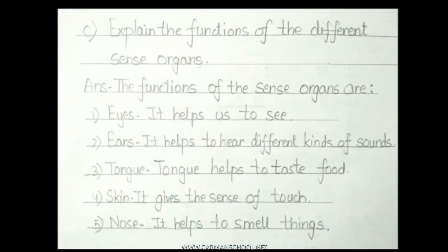Question C: explain the functions of the different sense organs. Answer: the functions of the sense organs are — first, eyes: it helps us to see. Second, ears: it helps to hear different kinds of sounds. Third, tongue: tongue helps to taste food. Fourth, skin: it gives the sense of touch. Fifth, nose: it helps to smell things.